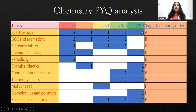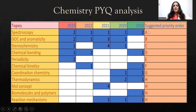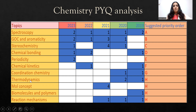I highly suggest you to first complete spectroscopy, then followed by GOC and aromaticity, followed by stereochemistry, followed by chemical bonding, periodicity, chemical kinetics, coordination chemistry, thermodynamics, mole concept, biomolecules and polymers, and then reaction mechanisms.